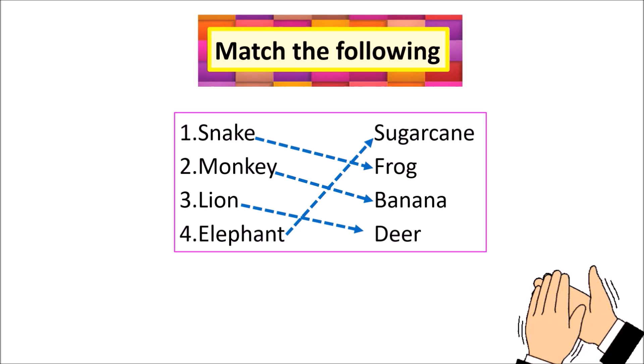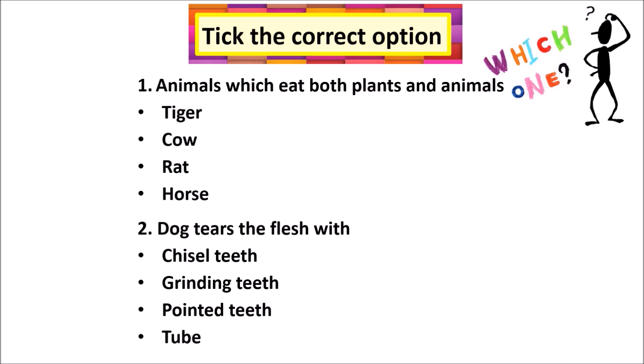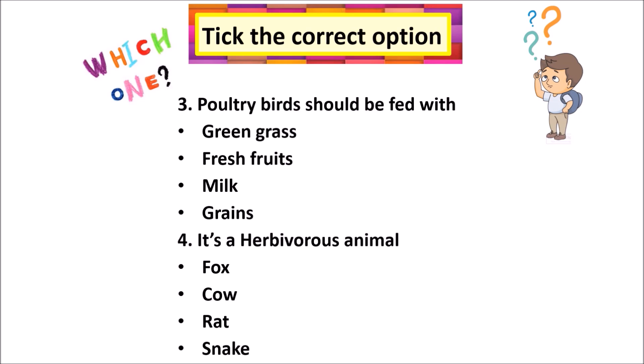Multiple choice questions. Number 1: Animals which eat both plants and animals — Tiger, Cow, Rat, or Horse? Answer: Rat. Number 2: Dog tears the flesh with — chisel teeth, grinding teeth, pointed teeth, or tube? Answer: Pointed teeth. Number 3: Poultry birds should be fed with — green grass, fresh fruits, milk, or grains? Answer: Grains. Number 4: Which is a herbivorous animal — Fox, Cow, Rat, or Snake? Answer: Cow.